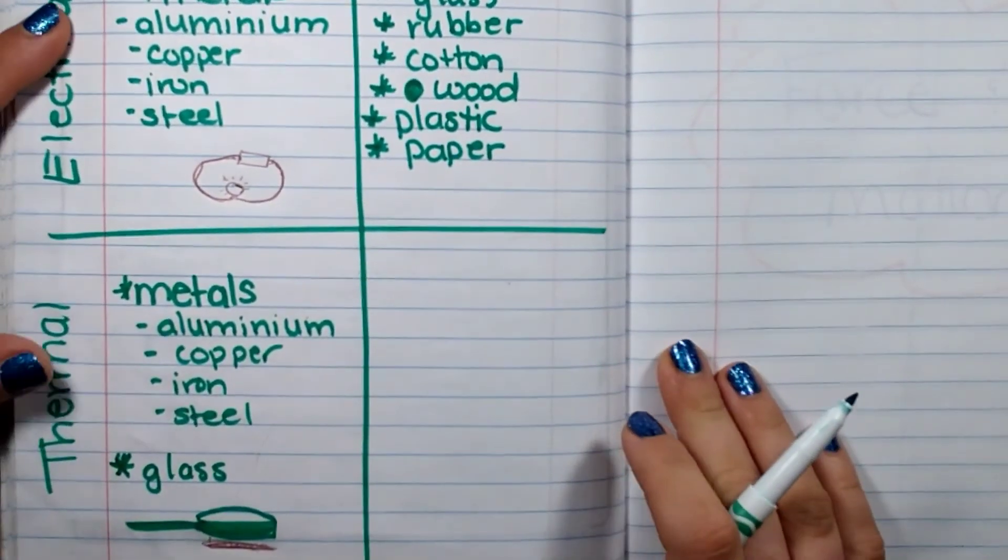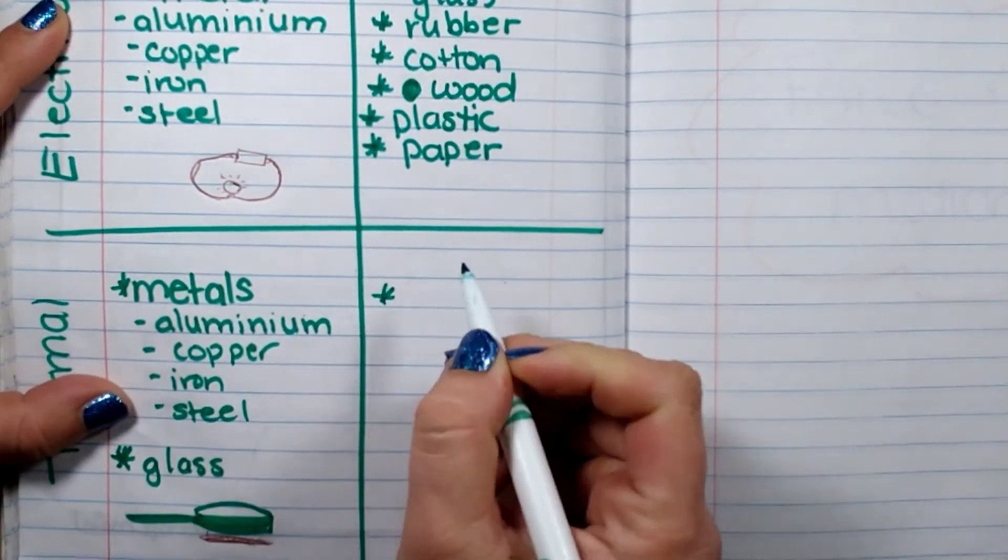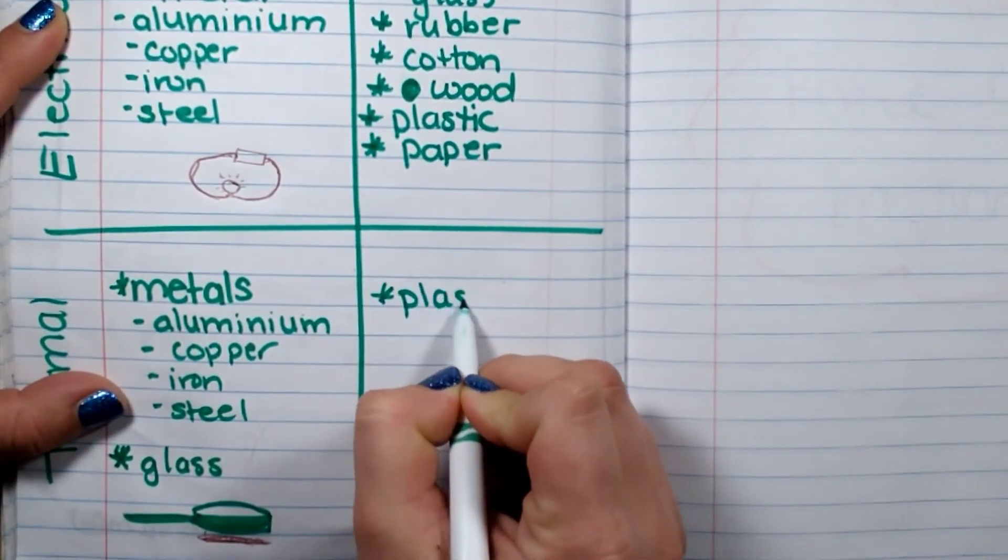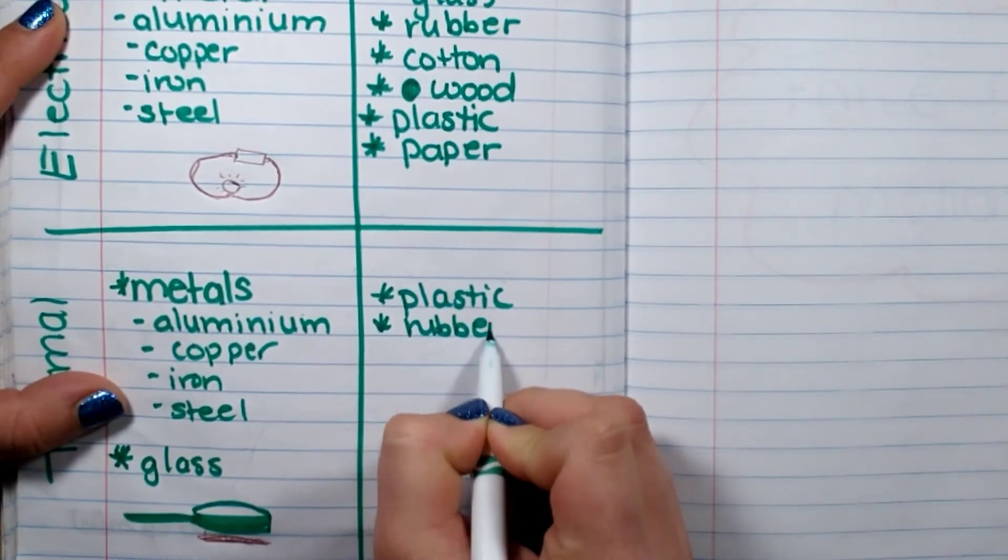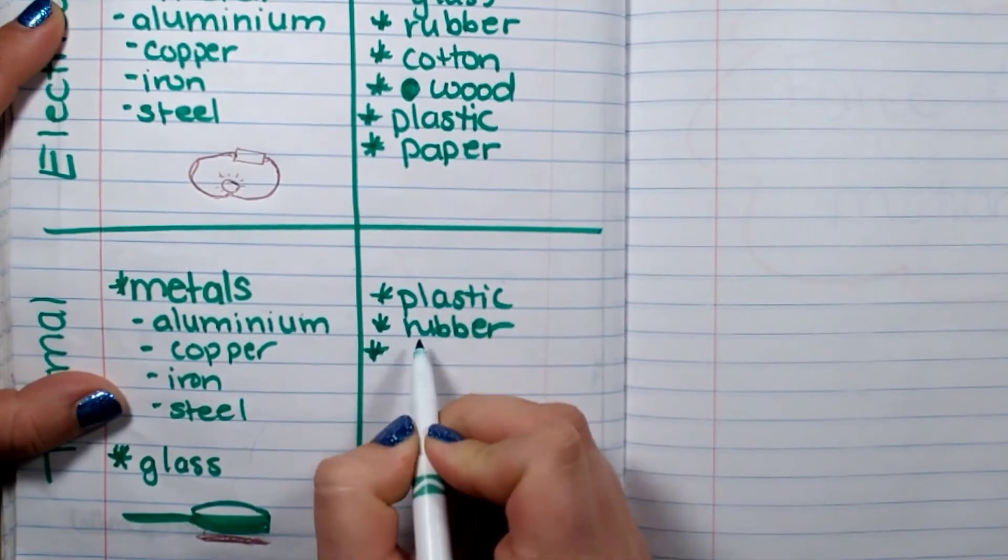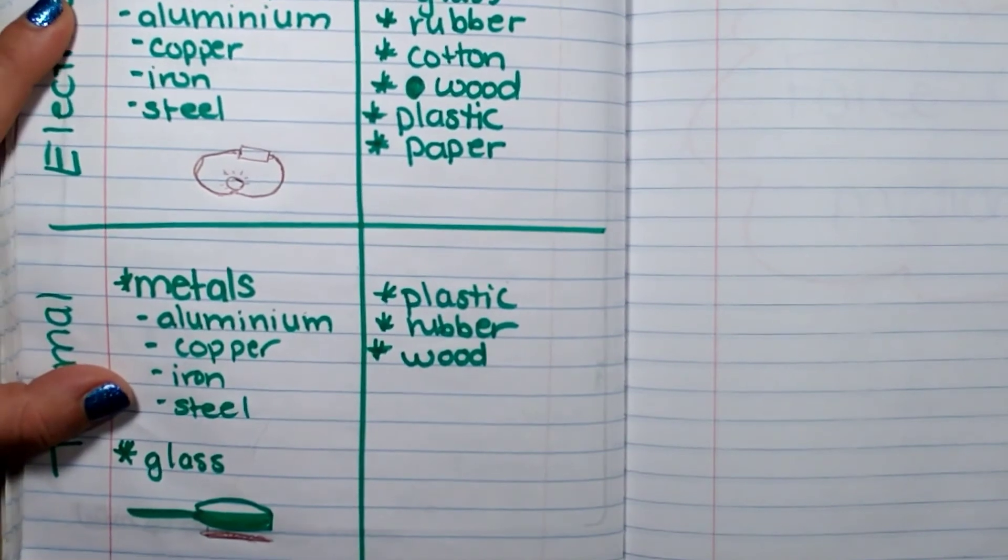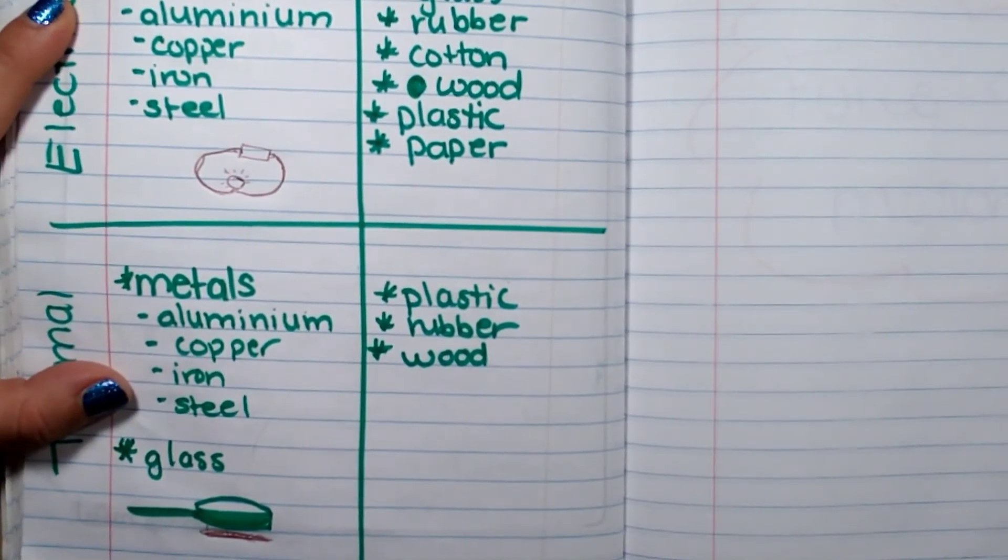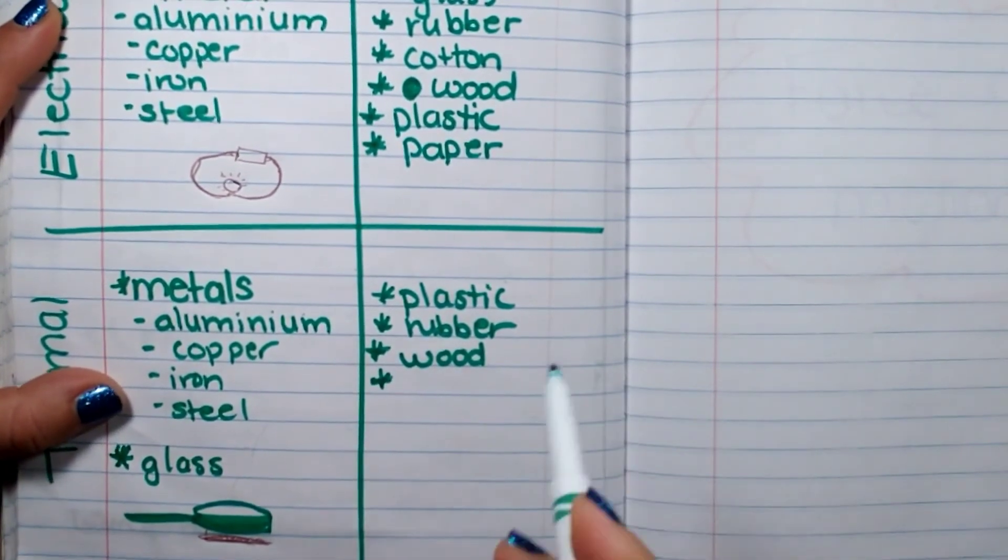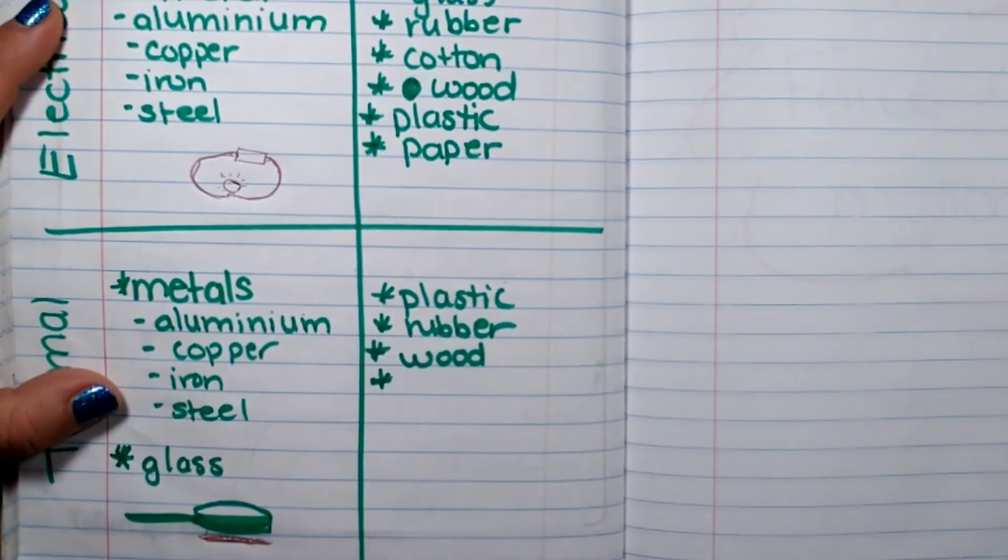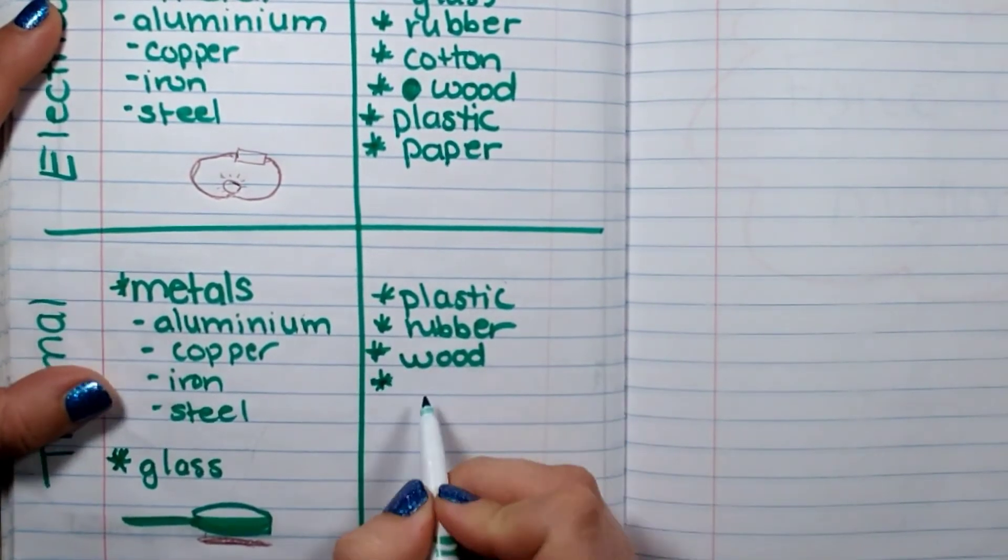And for thermal energy, we have plastic, rubber, and wood. That's why you would use a plastic or a rubber tip or a wooden spoon when you are stirring something. It doesn't make it as hot. You don't want to use a metal spoon because it will make it really hot. It will travel up the spoon and burn you.